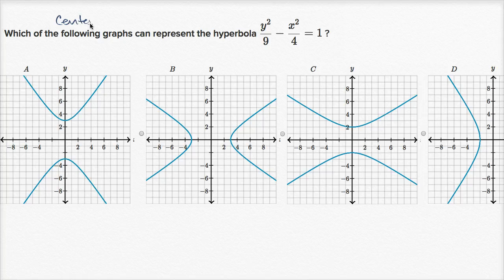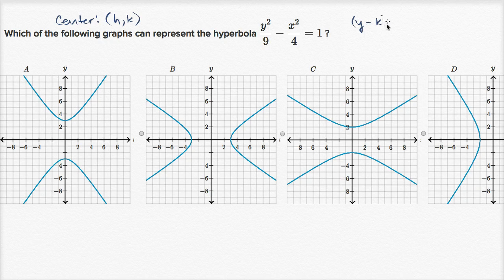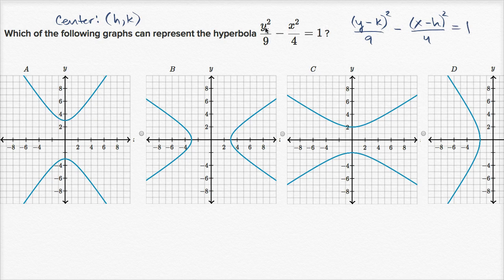If the center was at the point (h, k), then this equation would be (y minus k) squared over nine minus (x minus h) squared over four equals one. In this case, h and k are both equal to zero, so you get y minus zero squared and x minus zero squared. The center is at (0, 0), and you can see that for all of the choices.